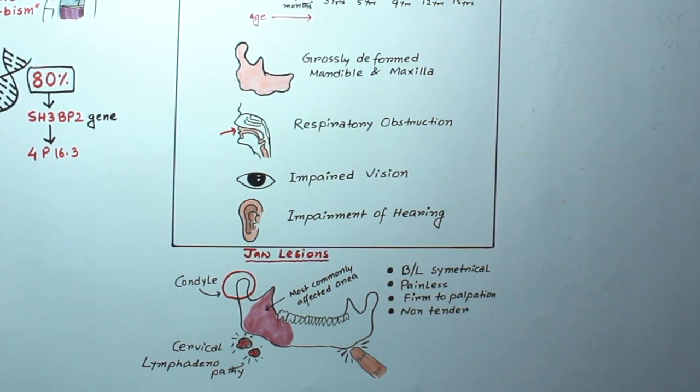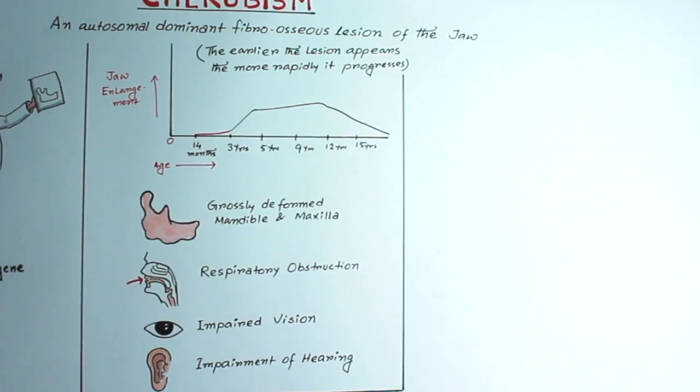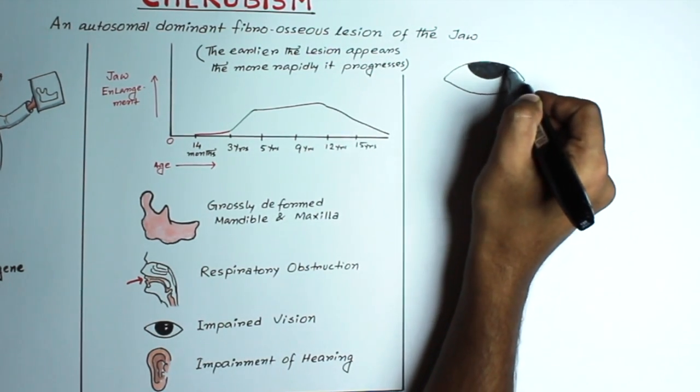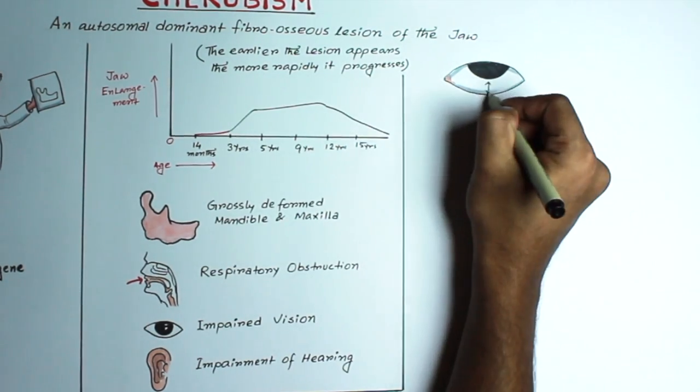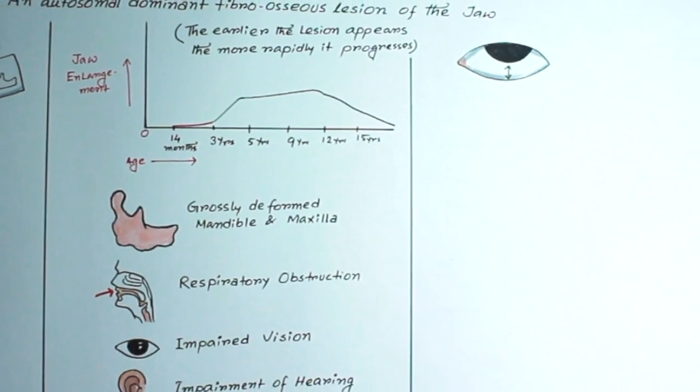In severe cases, involvement of the inferior and lateral orbital walls may tilt the eyeballs upward and retract the lower eyelid, thereby exposing the sclera below the iris to produce a typical 'eyes-to-heaven' appearance.